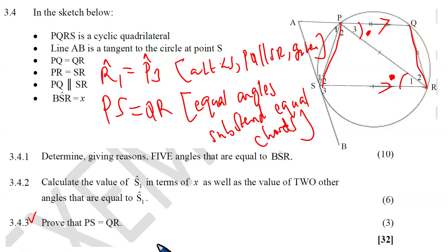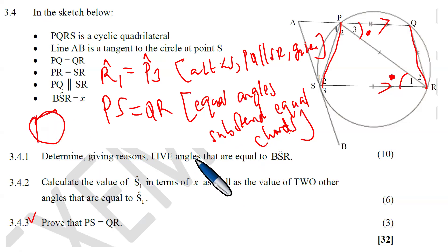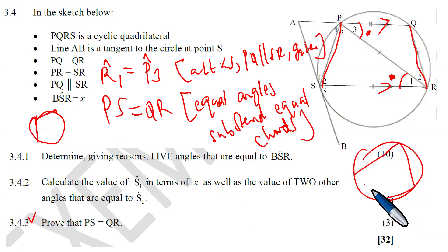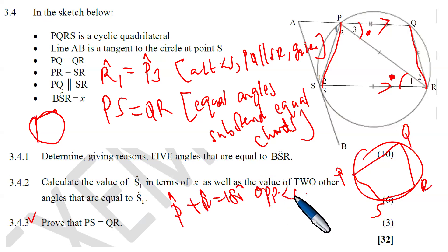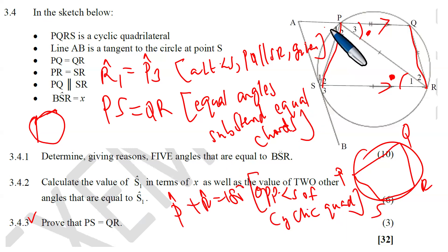There are important results to know about cyclic quadrilaterals: the opposite angles of a cyclic quad are supplementary. So for cyclic quad PQRS, angle P plus angle R equals 180 degrees — those are opposite angles and they are supplementary. Similarly, the exterior angle of a cyclic quad equals the interior opposite angle.